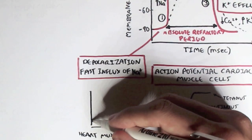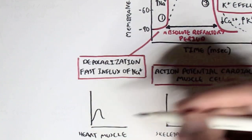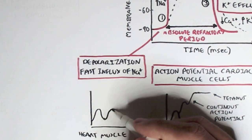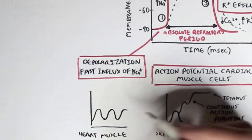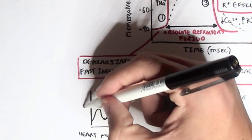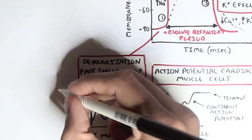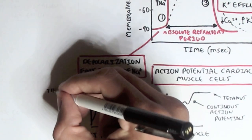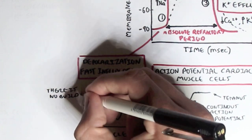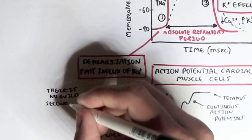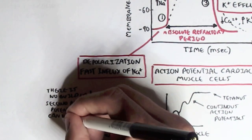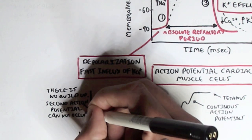For heart muscles, an action potential creates contraction, but a second action potential cannot be generated — it can only be generated after the first action potential has completely finished, after the contraction has completely finished. This is known as the absolute refractory period: a second action potential cannot be generated until the first action potential has finished.